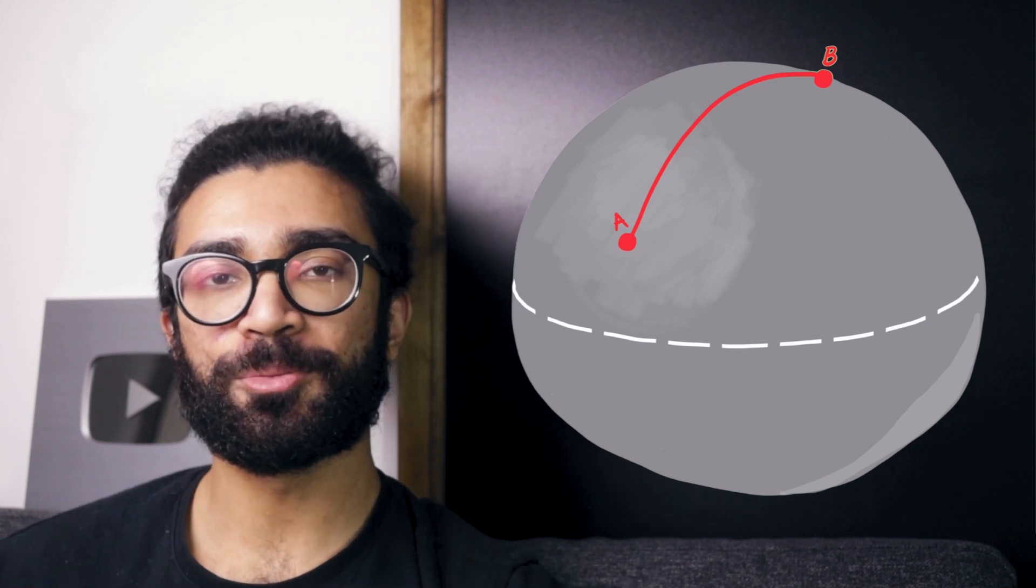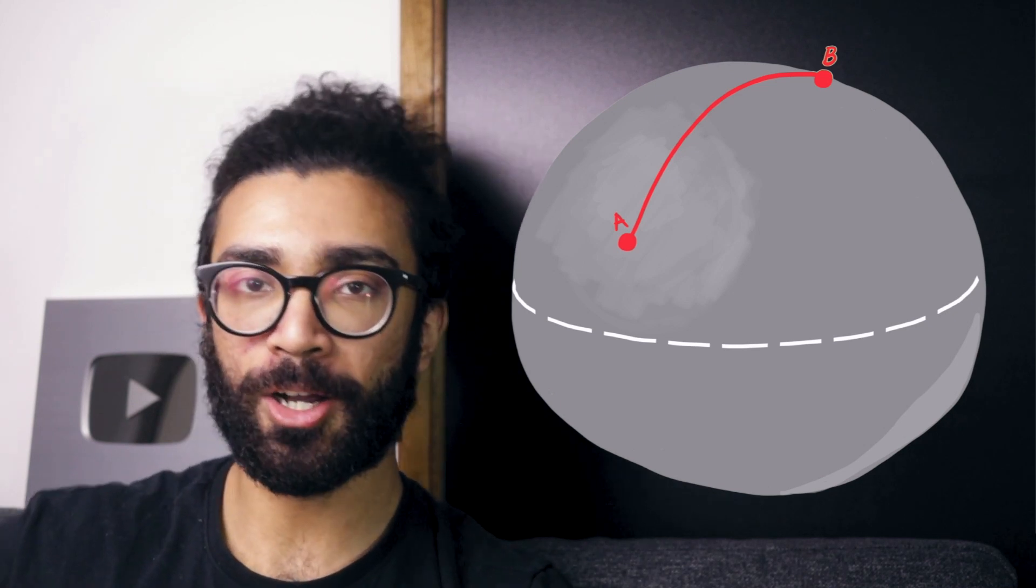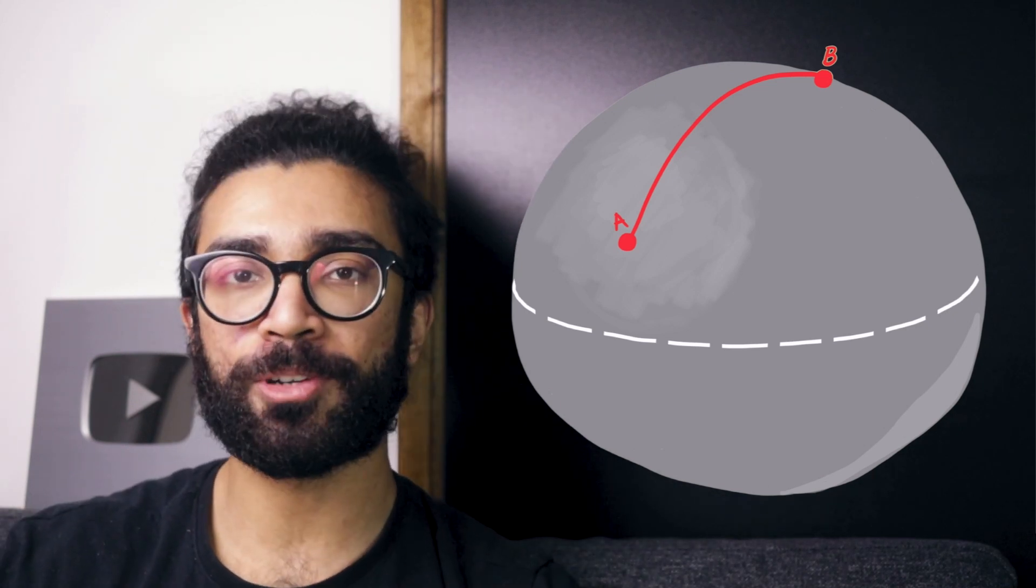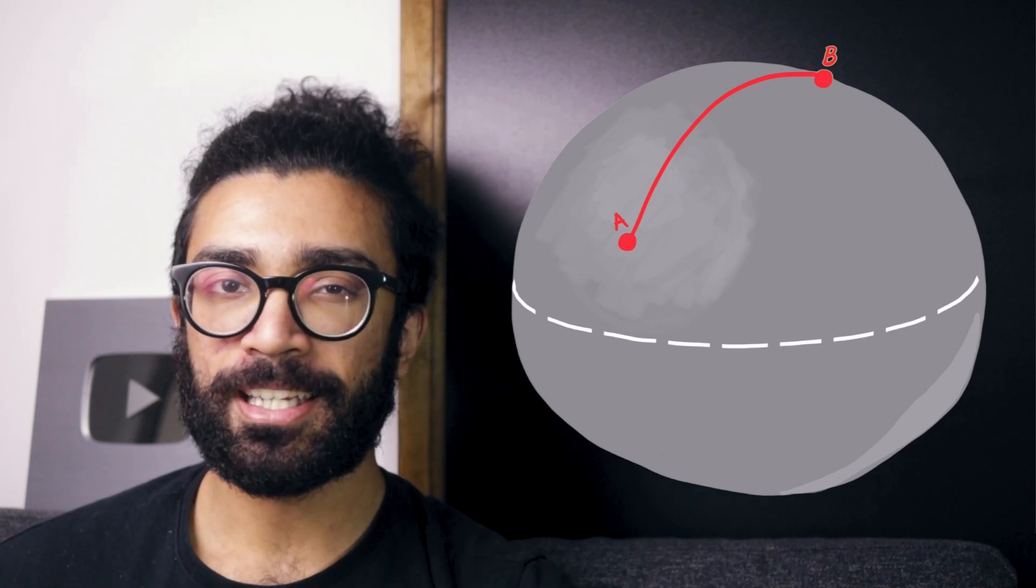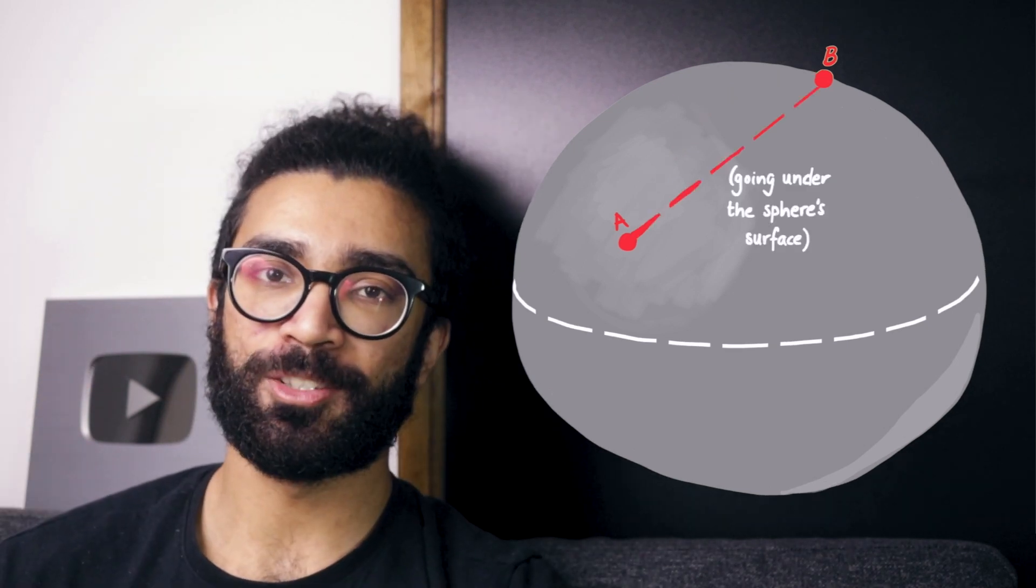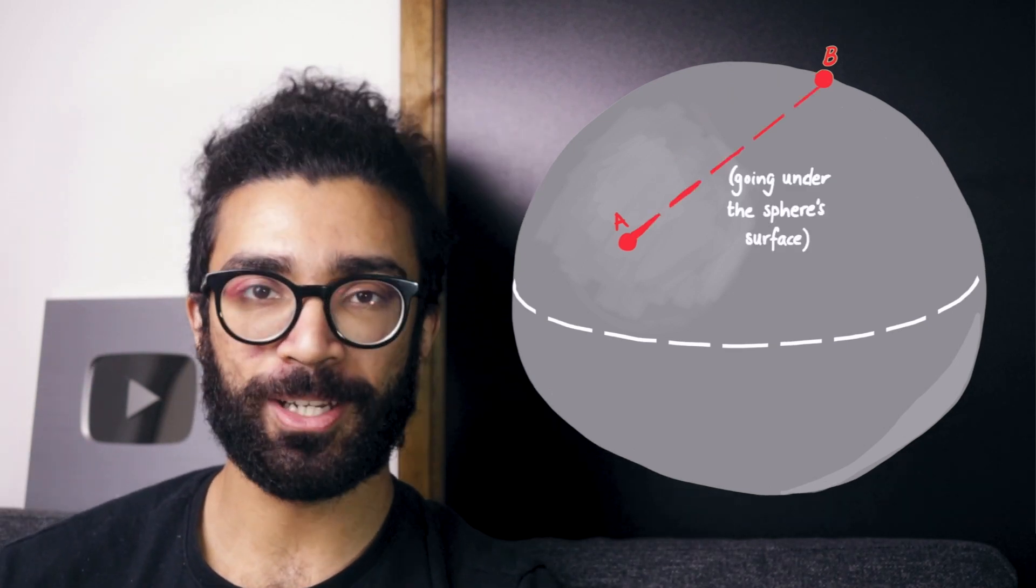In that example, the shortest distance between A and B was our curved geodesic if we were restricted to being on the surface of the sphere. But in reality, the actual shortest distance between the two points was the straight line between A and B.